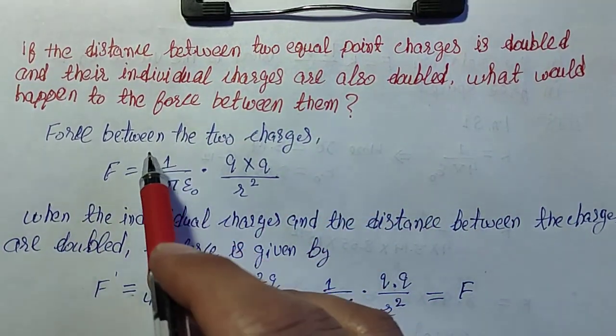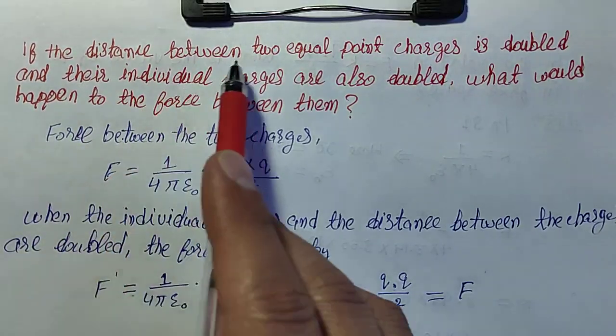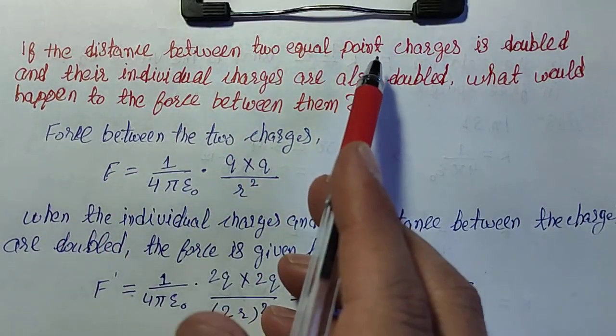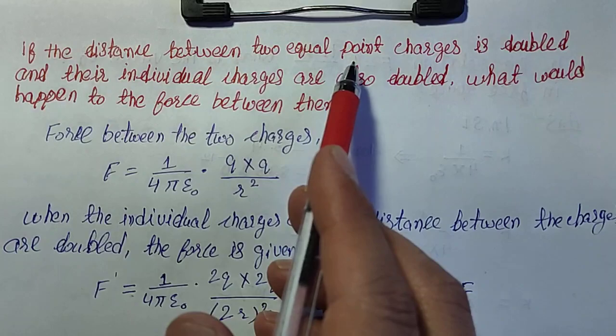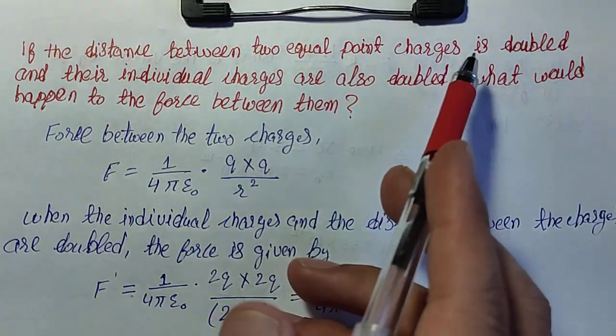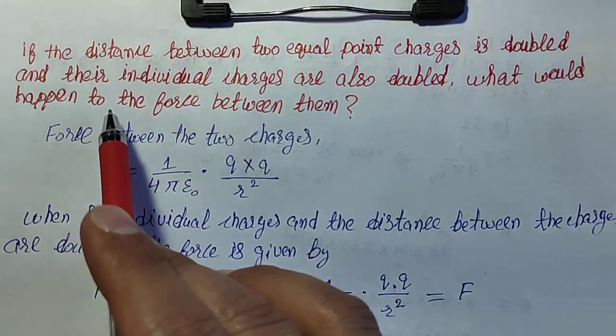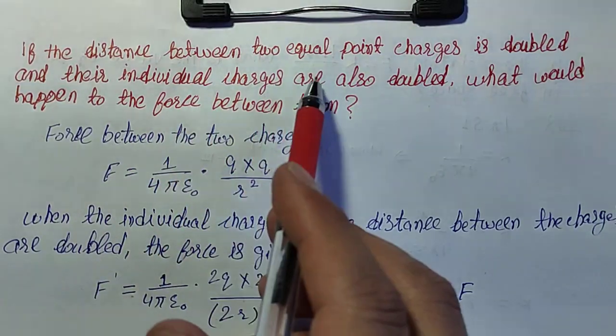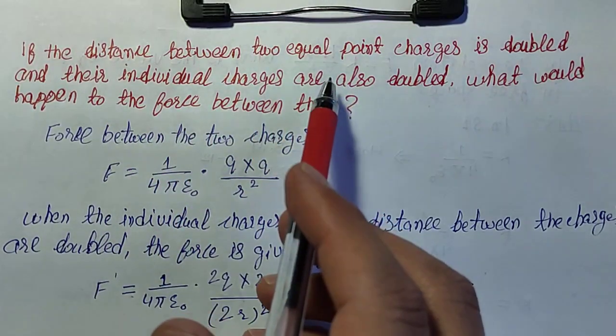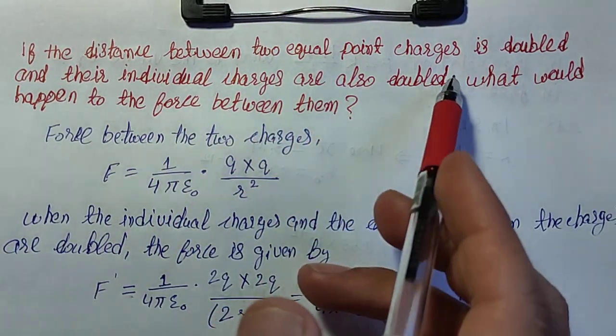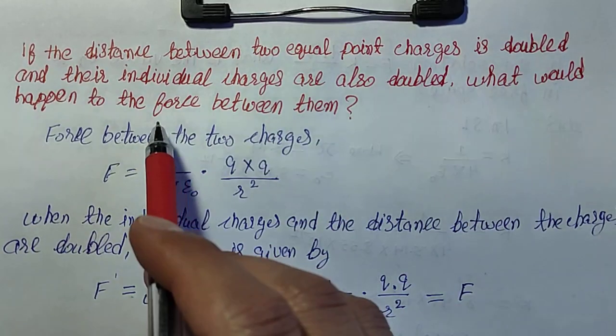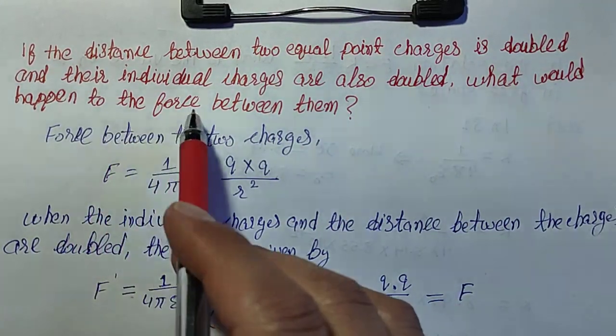Solution: If the distance between two equal point charges is doubled and their individual charges are also doubled, what would happen to the force between them?